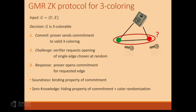For the zero-knowledge property, there are two ingredients. First, when you receive all the commitments, the hiding property means you have these big safes that reveal no information about the coloring. But later the verifier asks about some information — it learns what are the colors of the endpoints of one specific edge. The key observation is that the three-coloring problem has a nice structural feature: if you have a three-coloring, any random permutation of it is still a valid three-coloring. If you choose the permutation at random, the colors of just one specific edge are uniformly distributed over all valid colorings of that edge.